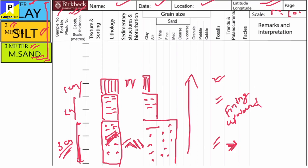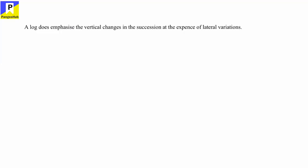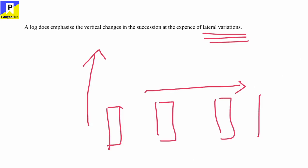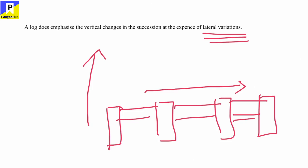On the remarks and interpretation section, we can say that the fining upward sequence can be a fluvial deposit. Like this, we can construct a sedimentary graphic log. A log does emphasize the vertical changes in the succession at the expense of lateral variation — meaning we can know the vertical changes, but not the lateral changes. If we want to know the lateral changes, we have to construct multiple logs at various locations, then correlate them to understand the lateral variation. This is the end of this class. Thank you.